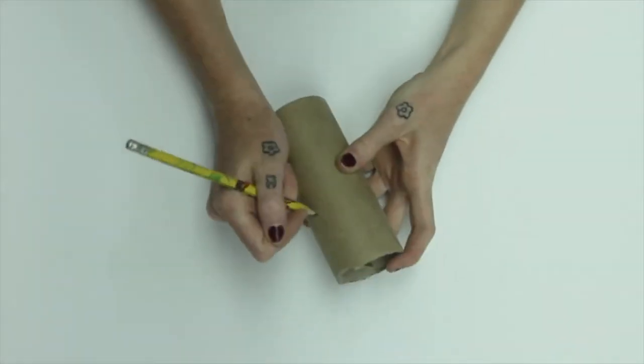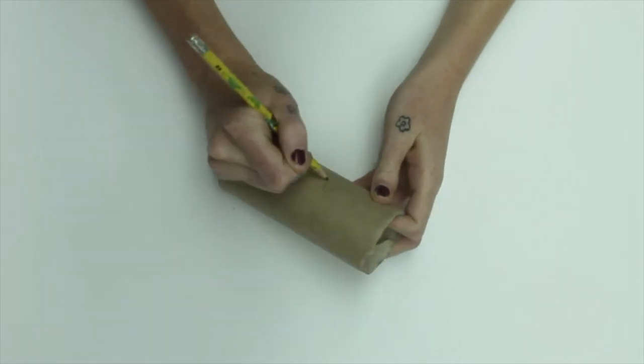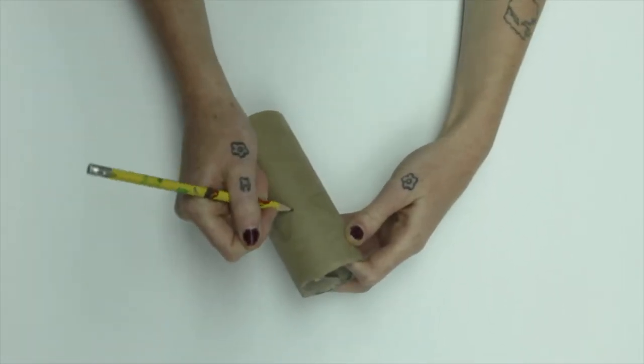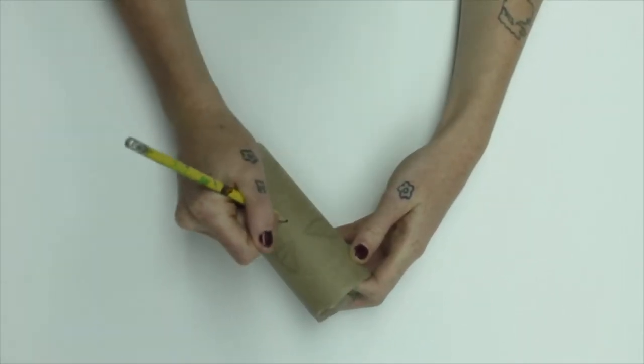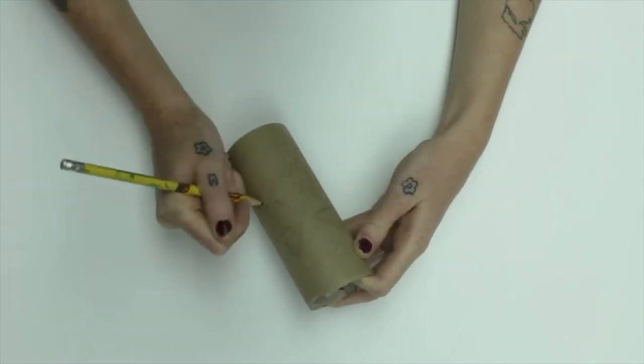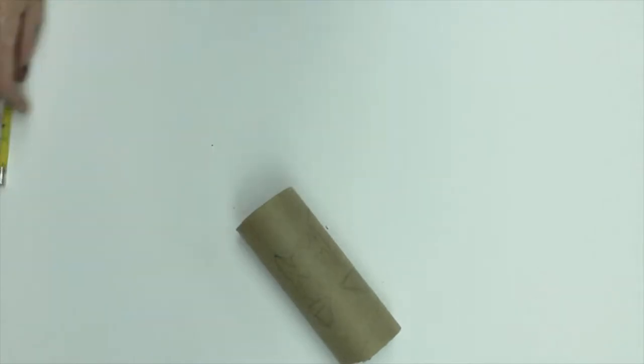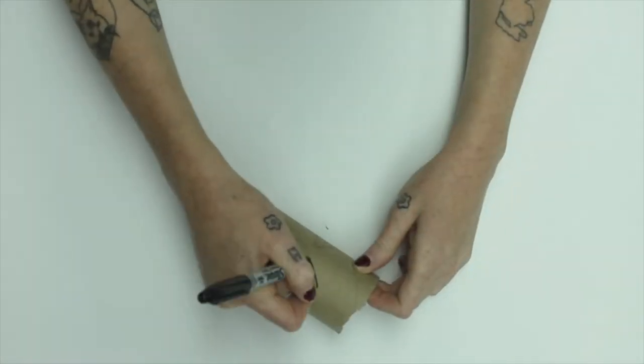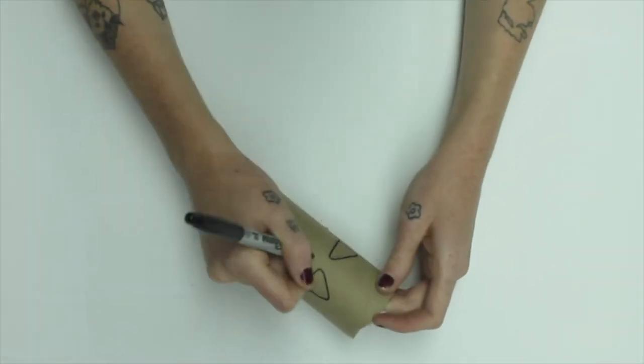So first step is drawing your spooky face. For this I just googled Jack O'Lantern faces and saw the general shapes that they use and I went with that. I then went over it with Sharpie just so I can see better when I'm cutting it.